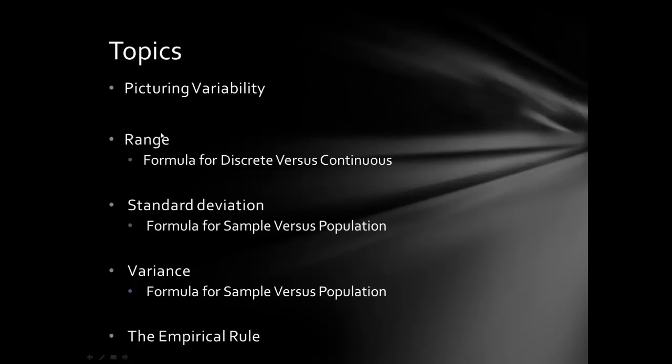Then we'll talk about the range — there are two different formulas, one for discrete variables and another for continuous. Then the standard deviation, again with two formulas: one for a sample and one for a population. Then the variance — two different formulas, one for the sample and one for the population. The standard deviation is just the square root of the variance, so those two measures are very closely related. Finally, the empirical rule, which outlines predictable proportions in a normal distribution based on the mean and the standard deviation.